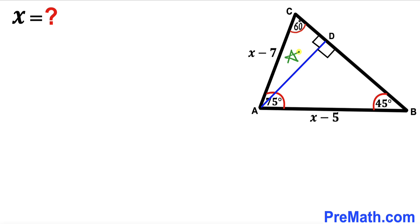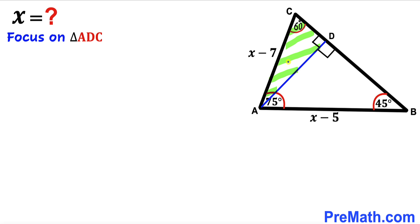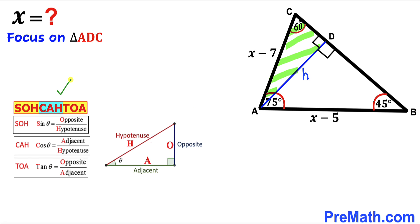The first one is right triangle ADC and the other is right triangle ADB. Let's focus on right triangle ADC. I'm going to label the perpendicular AD as our height h. Now let's recall SOH CAH TOA — we are interested in sine of 60 degrees, and sine equals opposite over hypotenuse.